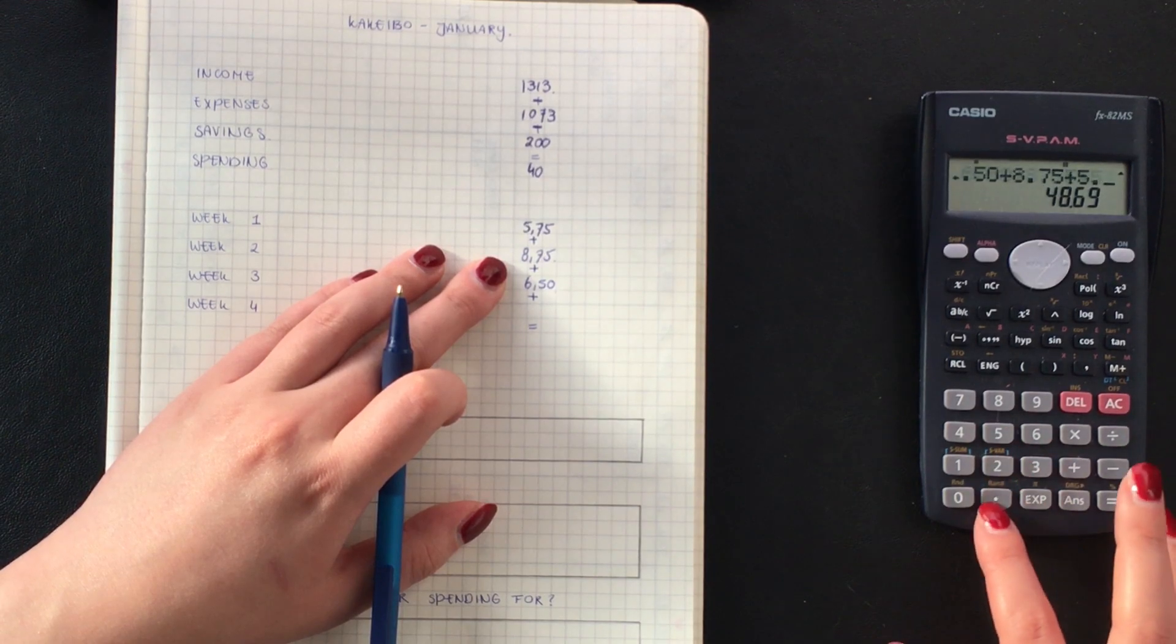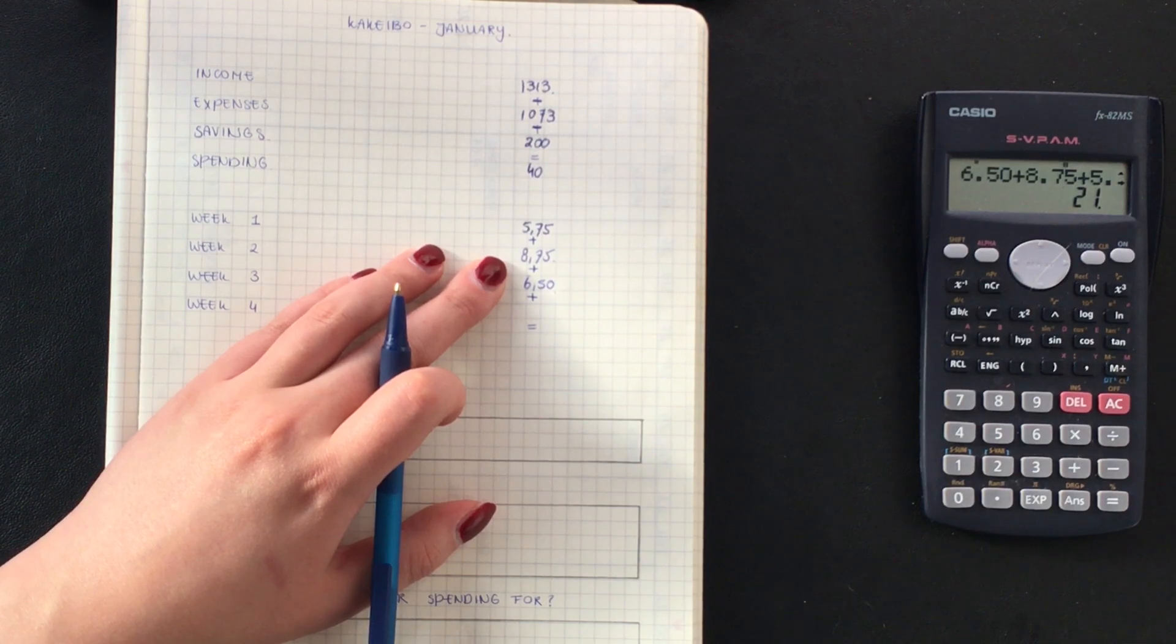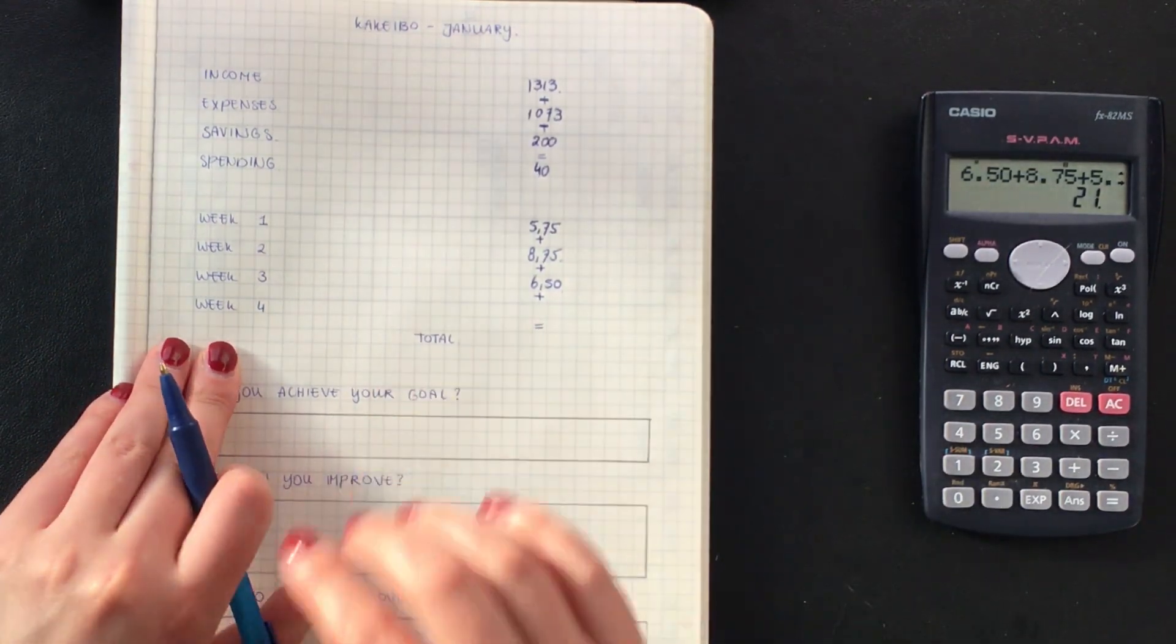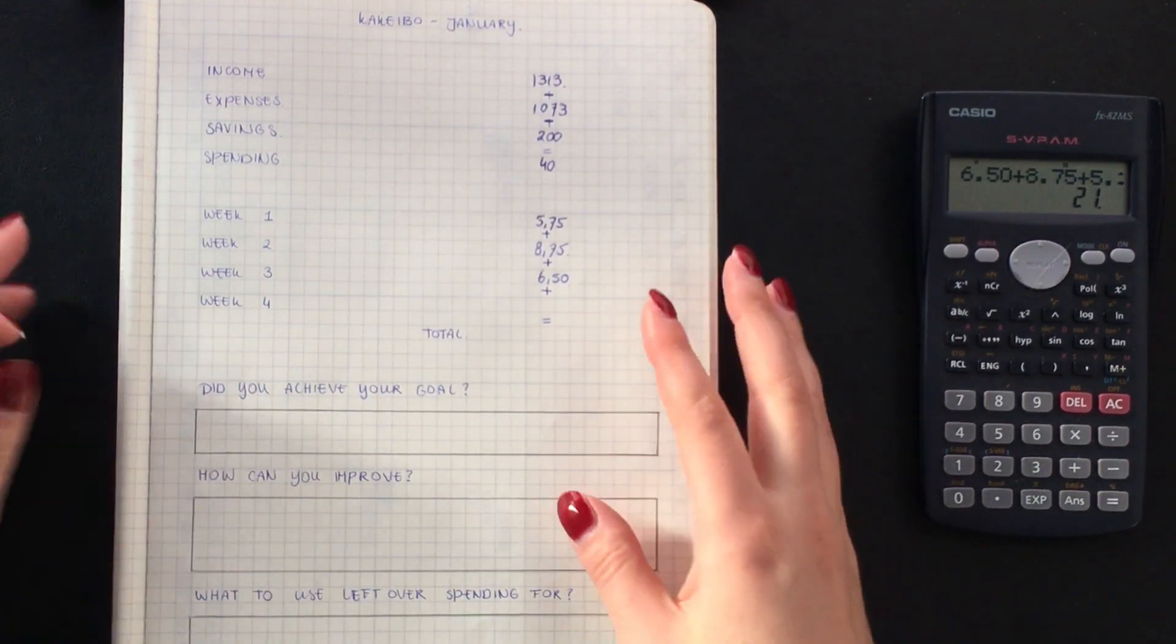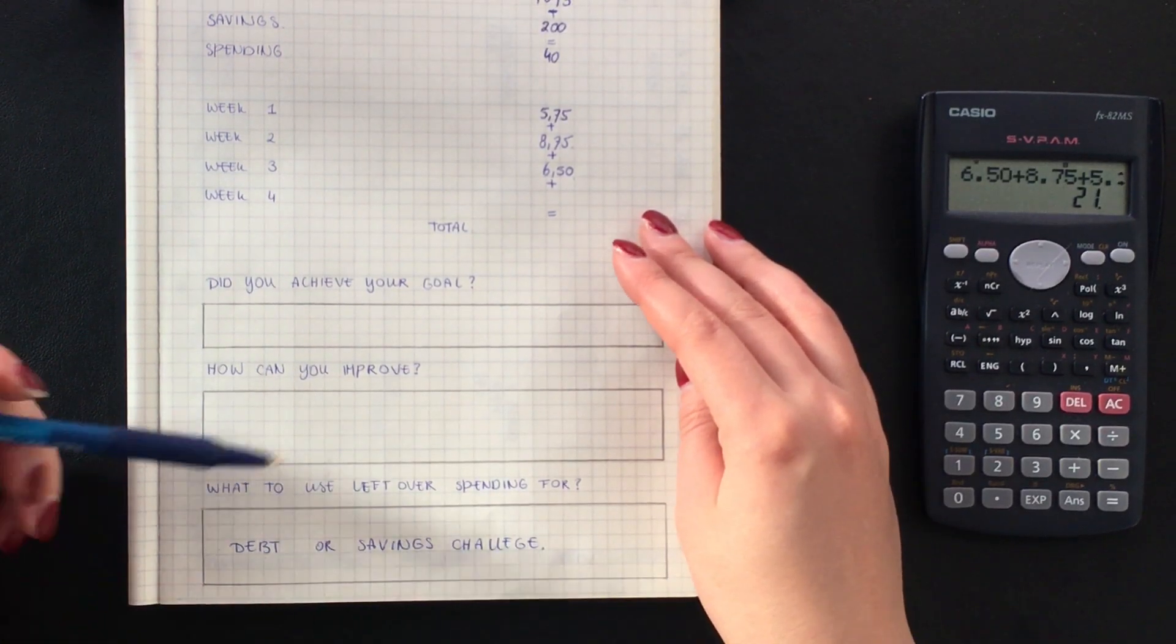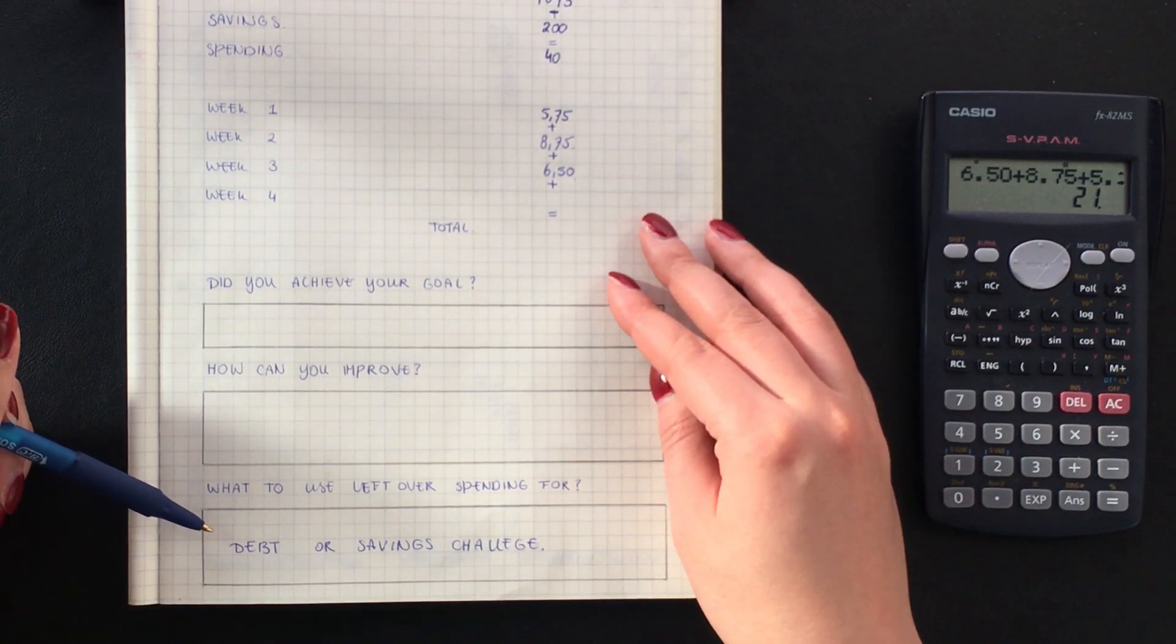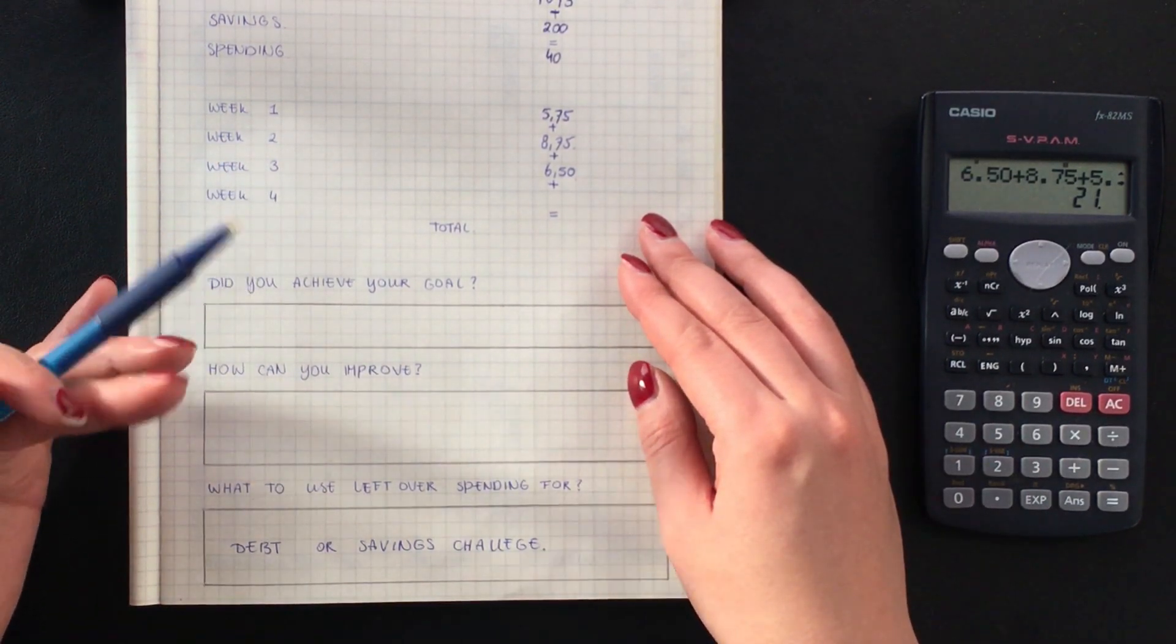8.75 and 5.75 which means I still have 19 euros left in my spending budget. I don't think I'm gonna blow that on just one week so I think I have some leftovers which will go into my debt or my savings challenge. I do think because of the extra cash I had from December I will not put it into debt but in my savings challenge, probably for my filming equipment.